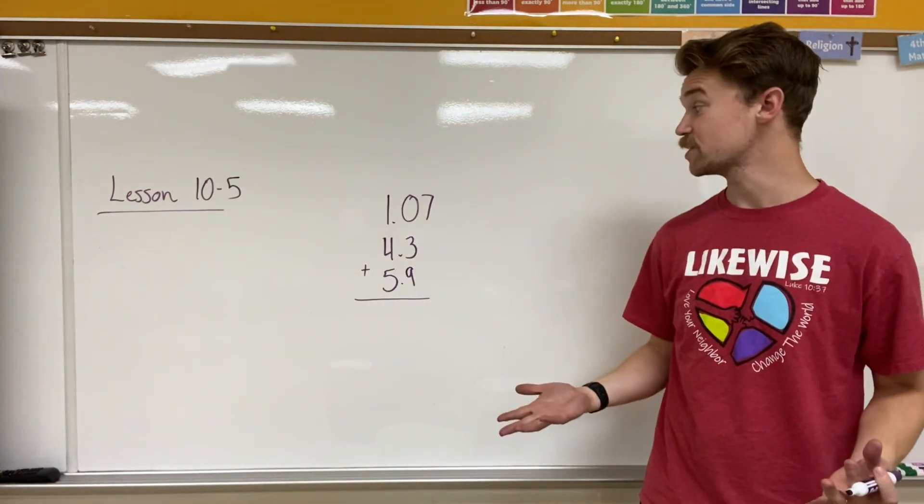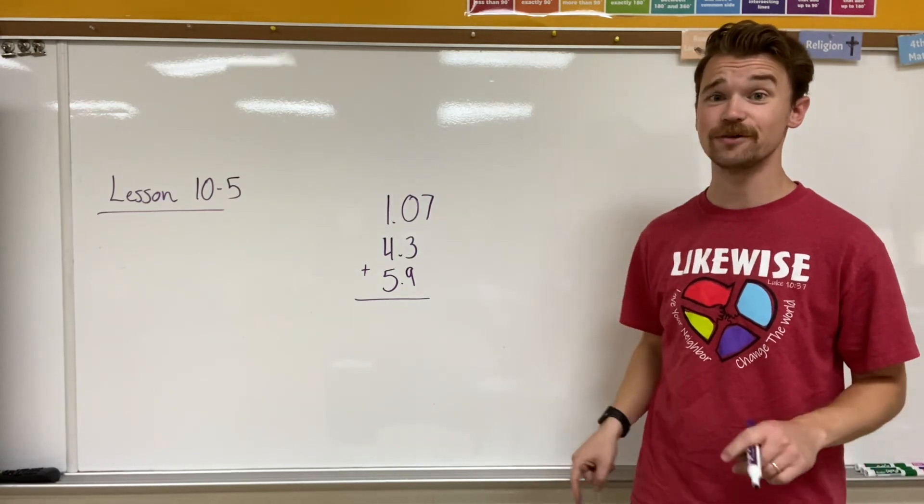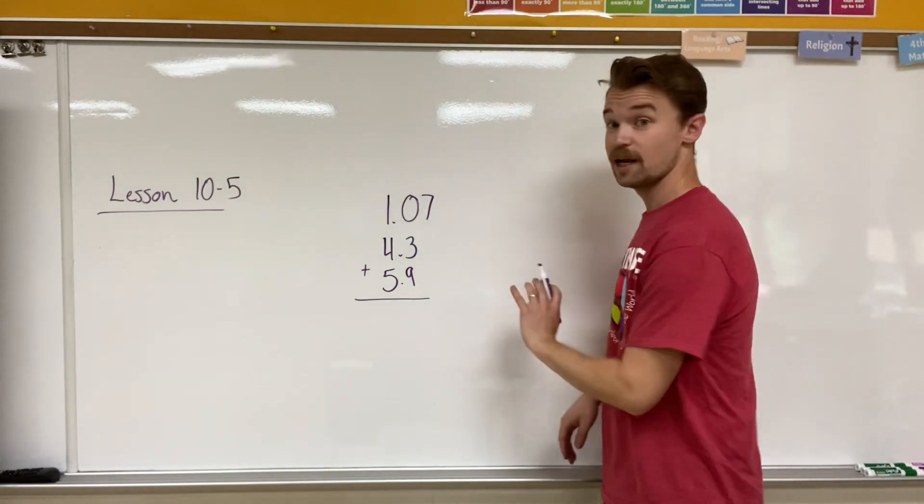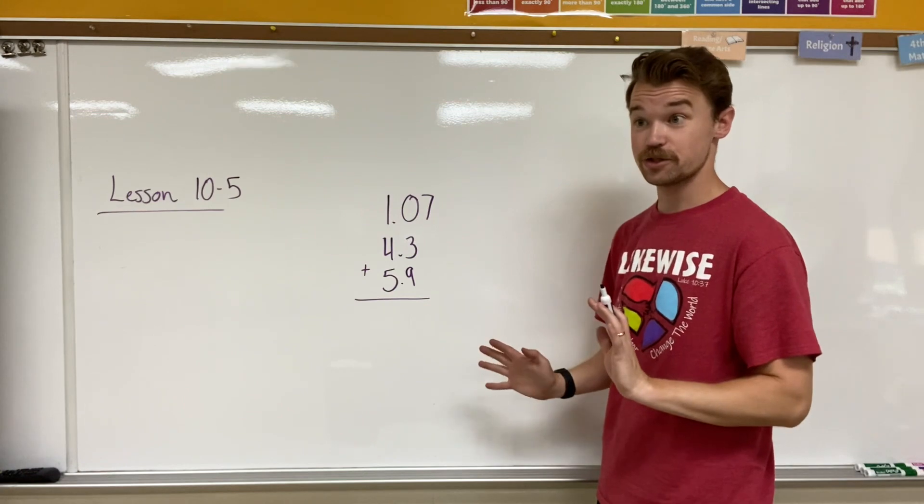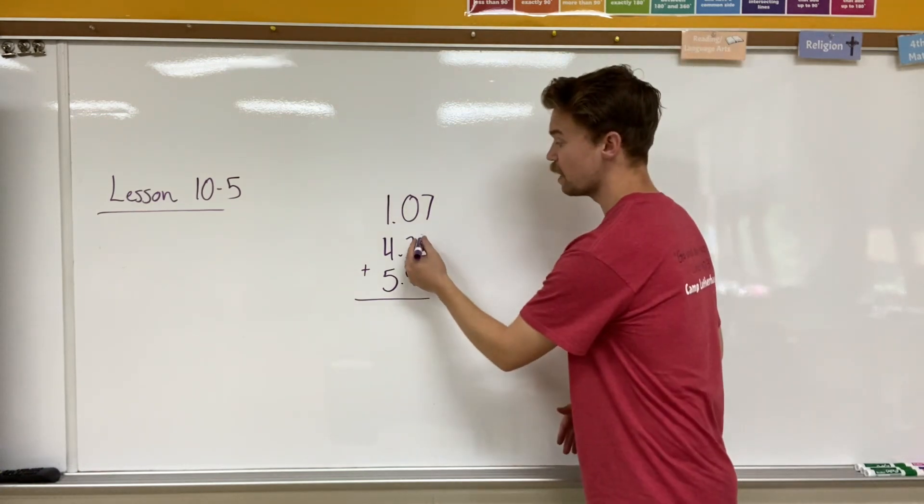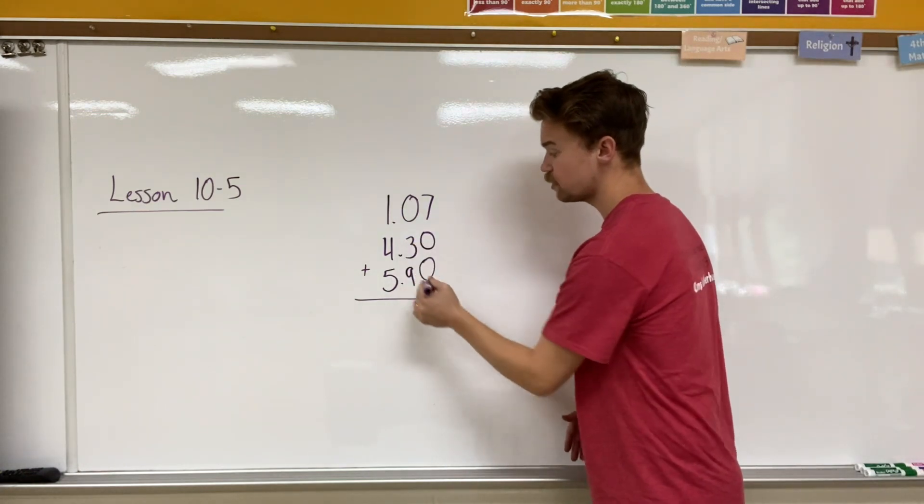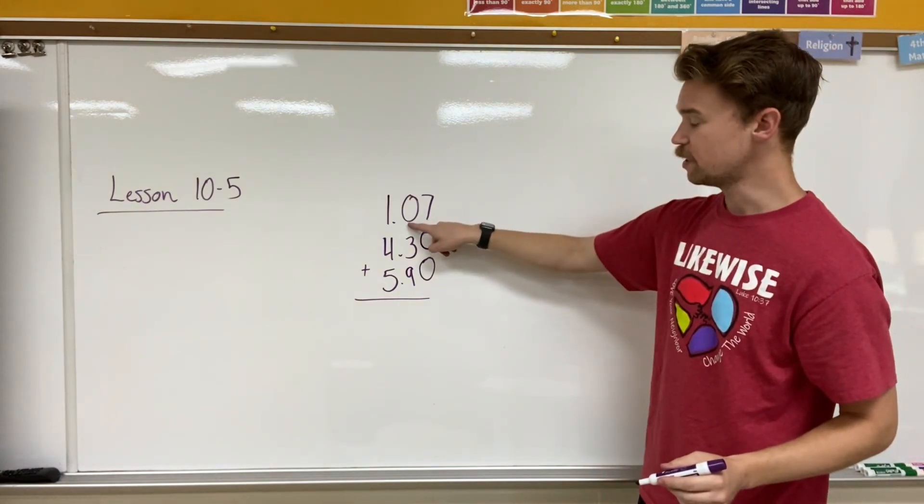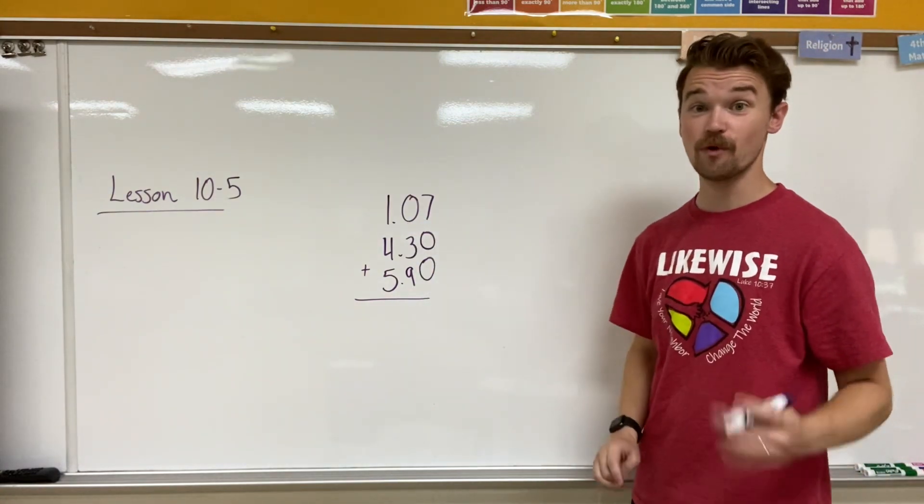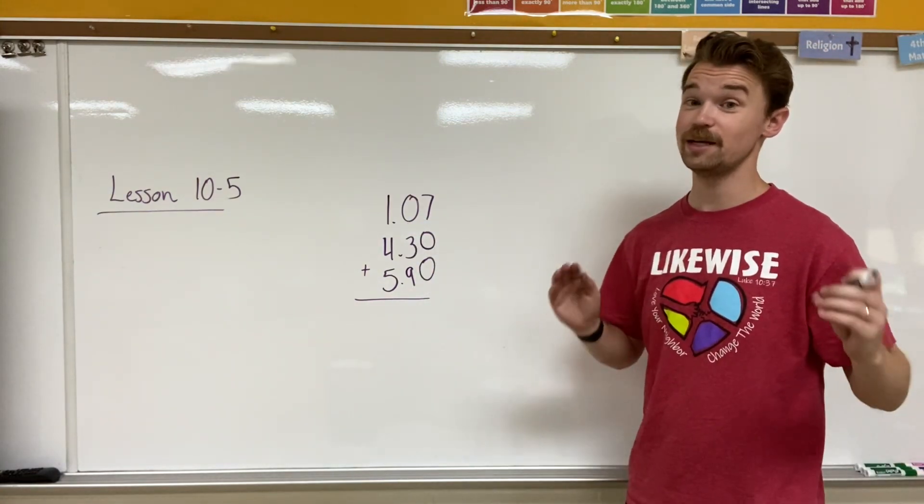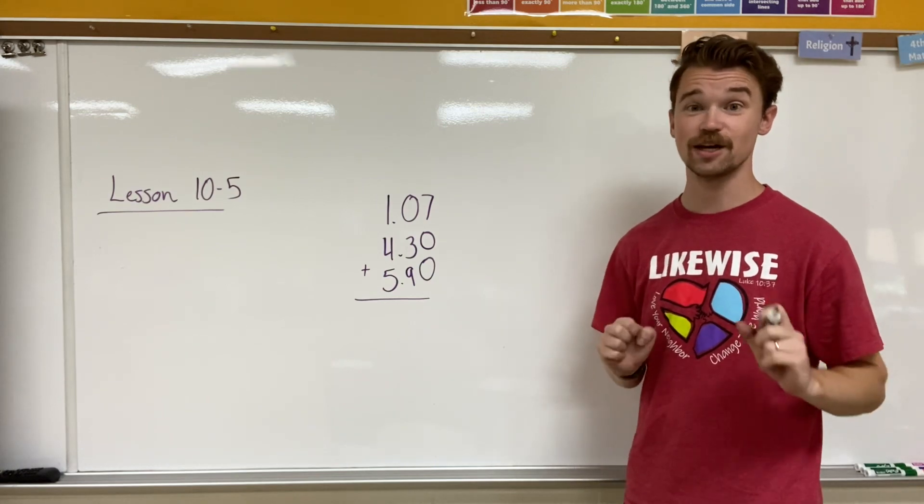Now if I'm taking a look at this example, I see that not all the place values are lined up. Now some students can add these just like they normally are, but I feel like it's best to make sure that all the place values are filled in in the tenth place and the hundredths place before I even start. That way it mitigates any sort of chance of mistakes.